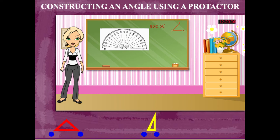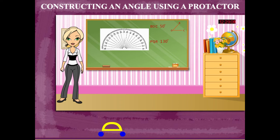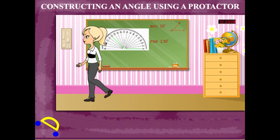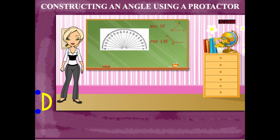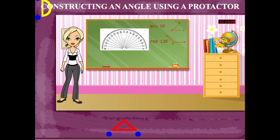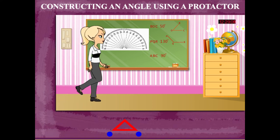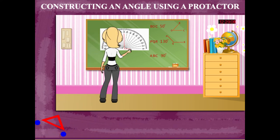Rosie now has to make an angle of 130 degrees, so she uses the same technique and makes angle PQR equals 130 degrees. Finally, Rosie makes an angle of 90 degrees using the same method, creating angle ABC equals 90 degrees.